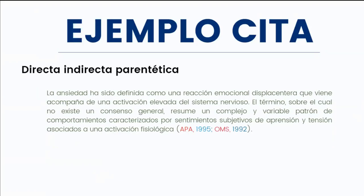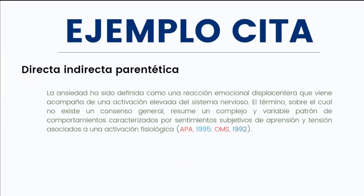Para una cita indirecta, estuve leyendo un artículo de la OMS sobre la ansiedad. Este es un ejemplo de una cita de una cita: cité a alguien que citó. En ese artículo que consulté, no tuve acceso al documento de la OMS de 1992 porque no lo tienen en línea, pero el artículo que consulté lo menciona y cita a ese documento. Yo puse la idea general en mis palabras, de manera resumida e interpretativa. La utilicé así porque yo no soy experta en la ansiedad y no podría decir todo lo que la OMS puede hablar acerca del sistema nervioso.